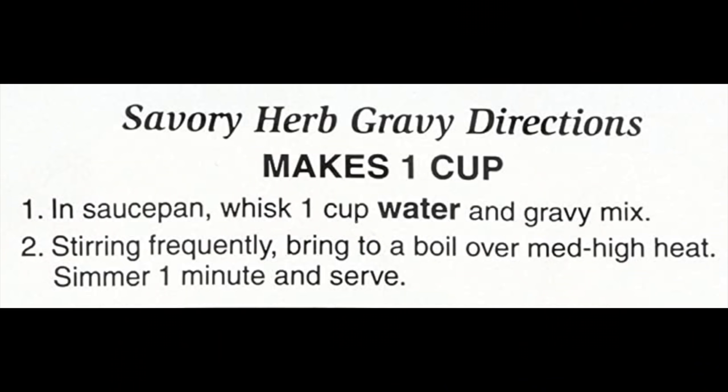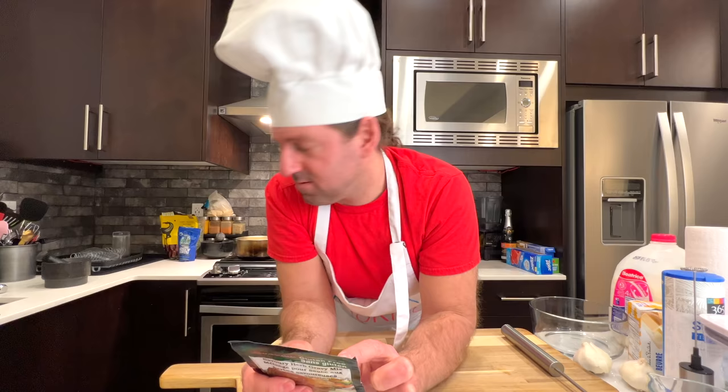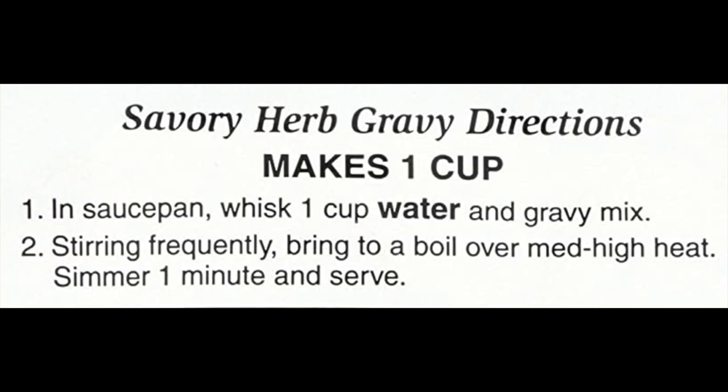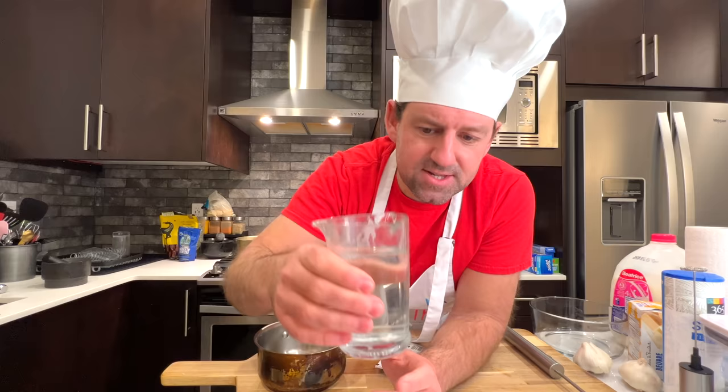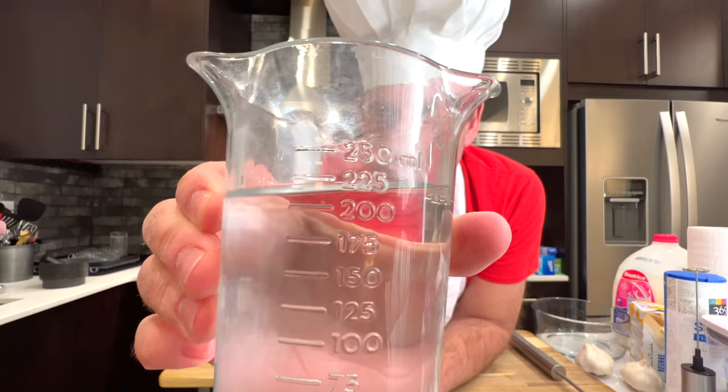Let's look at the directions. It says: in a saucepan — this is called a saucepan — whisk one cup of water and the gravy mix. That's the first step, it's so easy. We're going to grab our cup of water. One cup is eight ounces, or 250 milliliters. We're going to mix in the gravy mix.